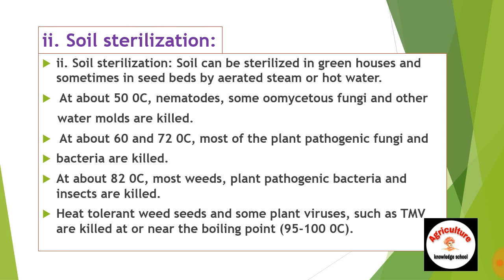At about 82 degrees Celsius, most plant pathogenic bacteria and insects are killed. Heat-tolerant weed seeds and some plant viruses such as Tobacco Mosaic Virus are killed at or near the boiling point, which is 95 to 100 degrees Celsius.